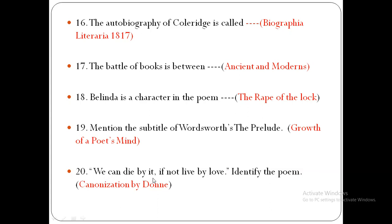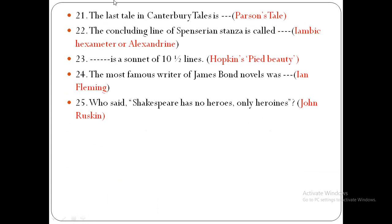'We can die by it, if not live by love' — identify the poem. It's from Canonization by Donne. The last tale in Canterbury Tales is actually the Parson's Tale. The concluding line of a Spenserian stanza is called iambic hexameter or alexandrine.